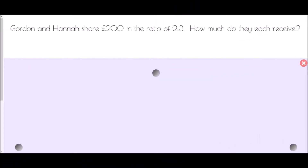In this video we're going to look at how we can share amounts out in a given ratio. For the first question, we're told that Gordon and Hannah share 200 pounds in the ratio two to three. The first thing I want to do in every single one of these questions is draw a diagram using a bar, separated into the number of pieces — two and three — which brings us to five pieces in total.